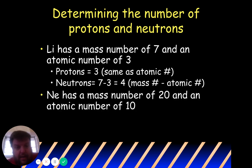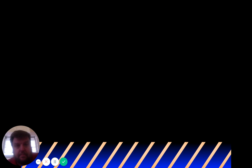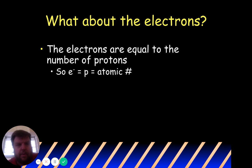Neon has a mass number of 20 and an atomic number of 10. How many neutrons are in this atom? Protons equal 10. Neutrons equal 20 minus 10, which is 10. What about the electrons? For this class, electrons will always equal the number of protons. That won't always be the case in chemistry, but for now, electrons equal protons, which equals the atomic number.